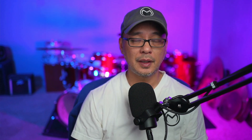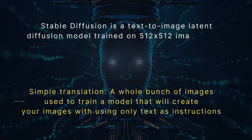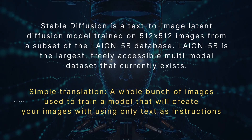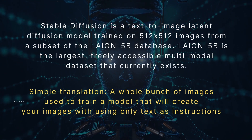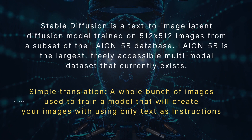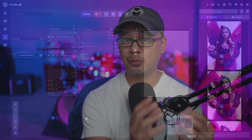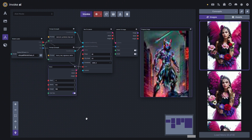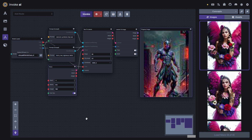First off, what is Stable Diffusion? Think of it as this massive database that is probably terabytes worth, shrunk down to a two gigabyte file. It then goes through a diffusion process that breaks down these images into noise, and when you enter a text prompt, it creates an image based on your text.